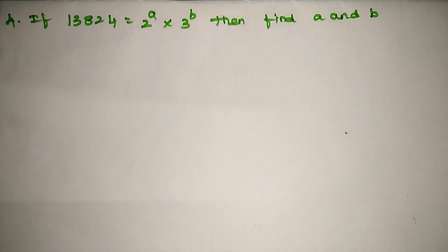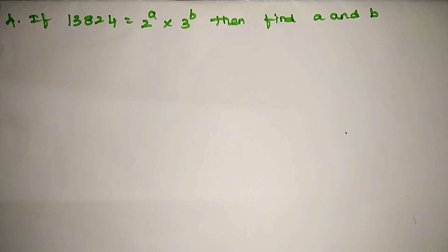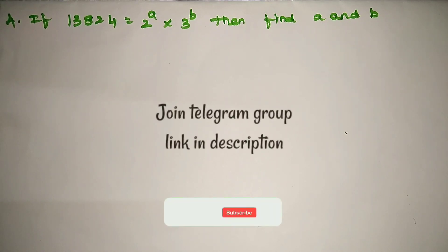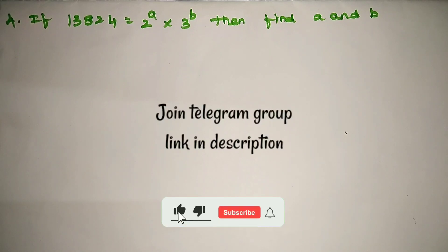Hi Students! XS2.2, problem 4: If 13824 is equal to 2^a into 3^b, then find a and b. If we factorize 13824, we will make a factor. I will make a factor.